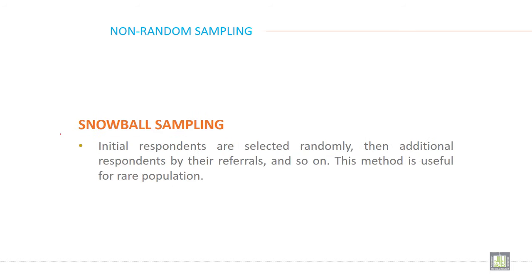Snowball sampling: initial respondents are selected randomly, then additional respondents are obtained through their referrals, and so on. This method is used for rare diseases and rare populations.